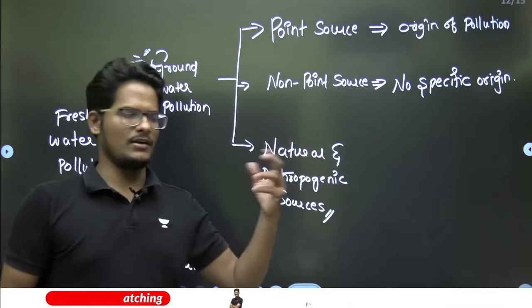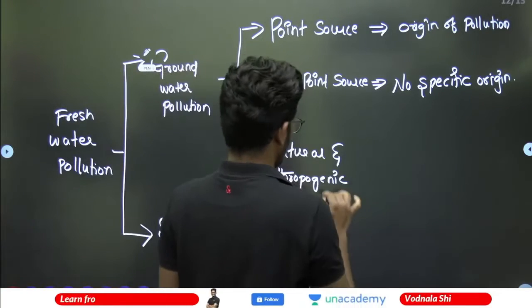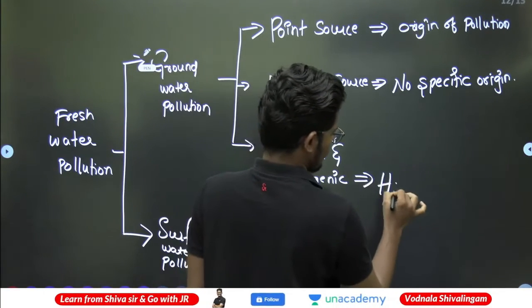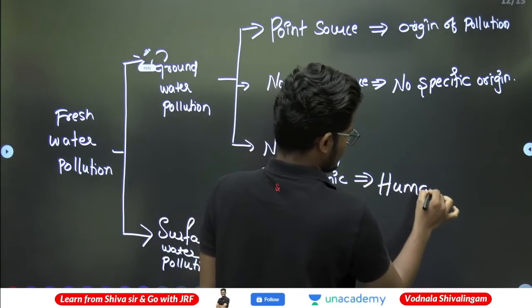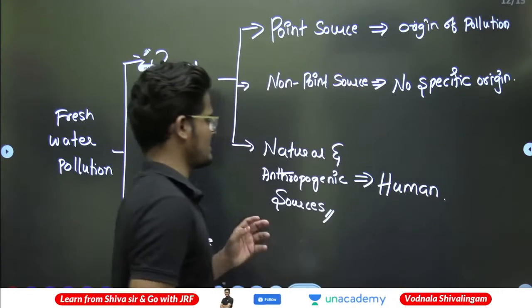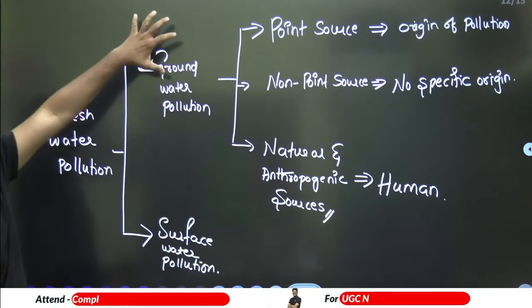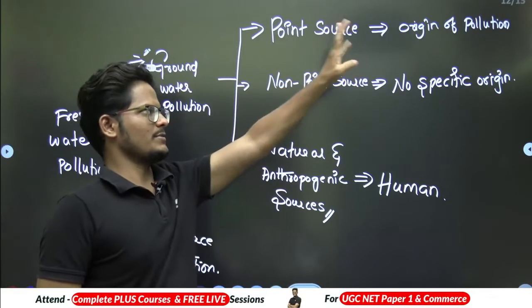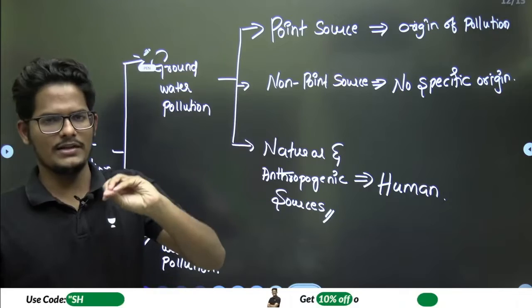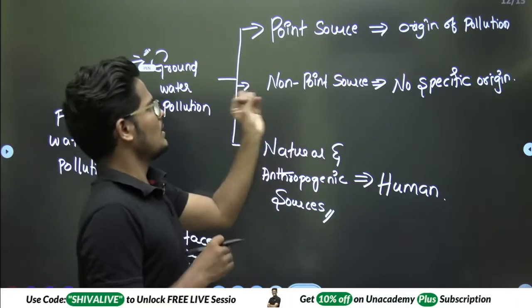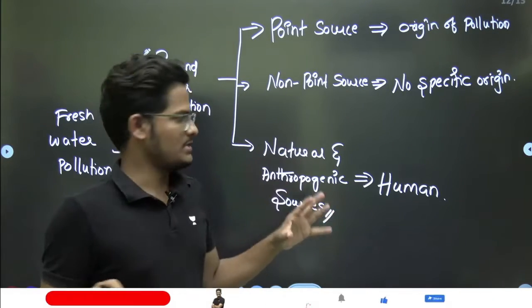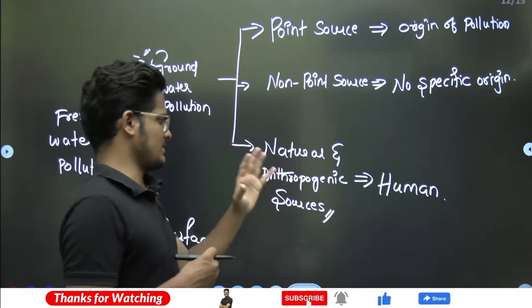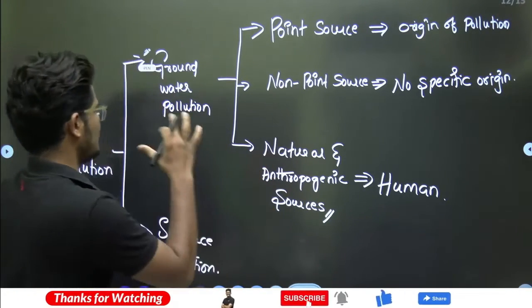Nonpoint pollutants get mixed up with rivers and our water supply. Anthropogenic sources mean this is happening because of human interaction only. So groundwater is getting polluted because of three things: point source — from where pollutants are coming is known; nonpoint — no specific origin; and natural and anthropogenic sources — pollutants coming because of human activity.